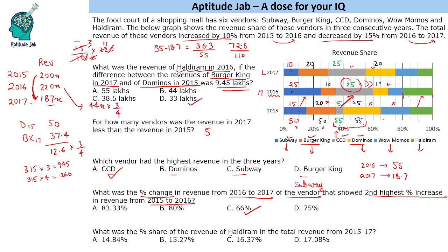The fifth question asks: what was the percentage share of Haldiram's revenue in the total revenue from 2015 to 2017? Total revenue = 200x + 220x + 187x = 607x. Haldiram's revenue: 15% of 200x = 30x in 2015, 20% of 220x = 44x in 2016, and 10% of 187x = 18.7x in 2017. Total for Haldiram = 92.7x. Percentage share = 92.7 / 607 ≈ 15.27%.